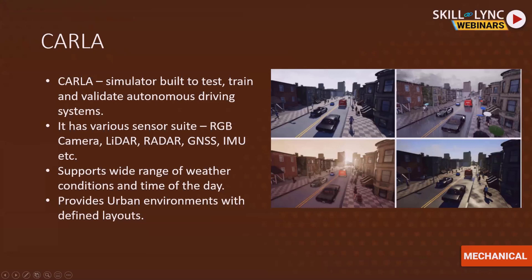CARLA supports day, rainy, sunny, and many other conditions. It is built on Unreal Engine 4, a game engine, so it uses realistic physics — you can change parameters like coefficient of friction in rain and other factors. It also has predefined urban layouts including two-lane highways, four-lane highways, and circular intersections, enabling rich, high-value scenarios for testing and validating autonomous driving modules.